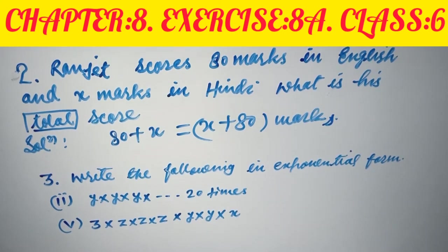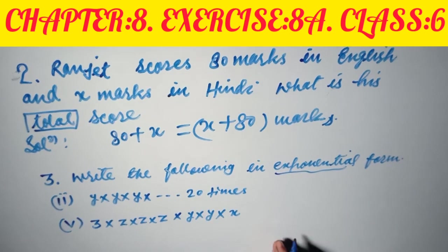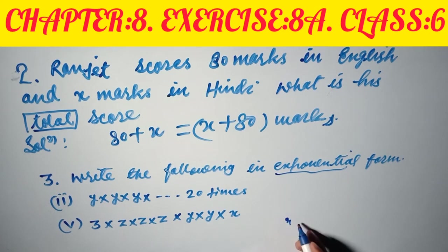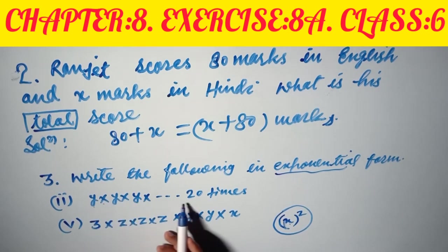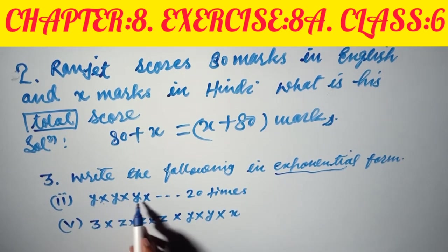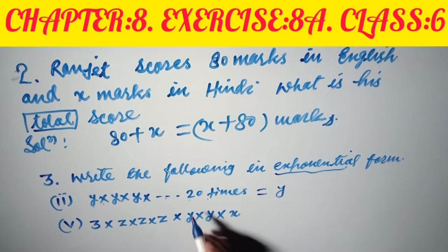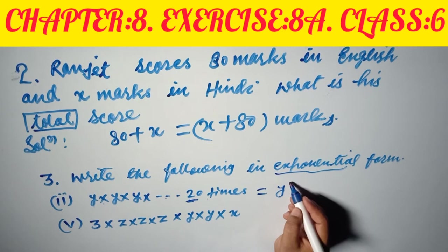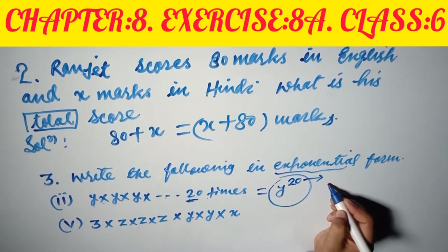Question number three: write the following in exponential form. Exponential form means a letter like y can be written with a power. For example, y multiplied by y up to 20 times — write the single letter y and write 20 as its exponent. This is y to the power 20. Here 20 is the exponent and y is the base — this is called exponential form.